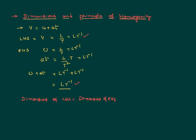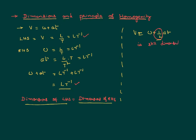The principle of homogeneity only checks whether the equation is dimensionally correct or not. For example, if I write v = u + ½at, this rule is still satisfied because ½ is a dimensionless number and the dimensions of LHS still equal the dimensions of RHS. So this equation is dimensionally correct, but it is not scientifically correct as per the physics rules.